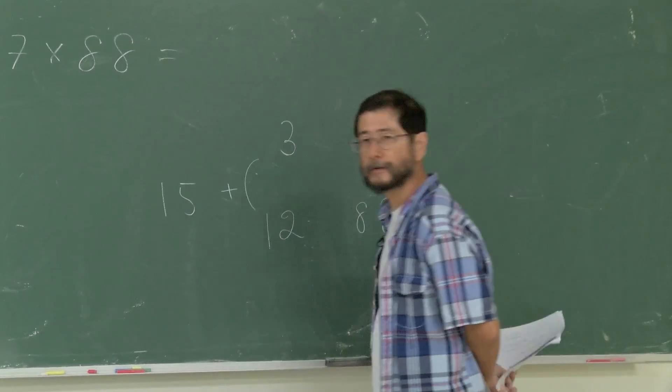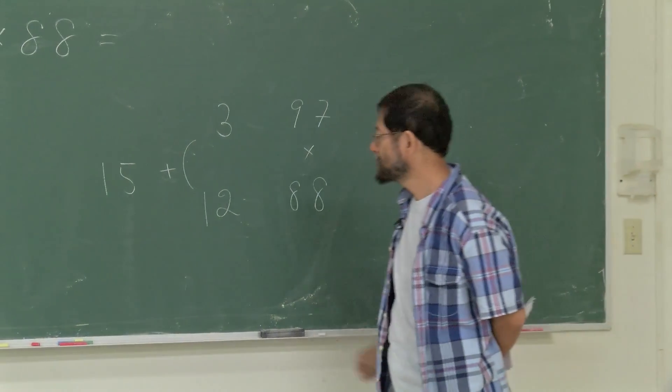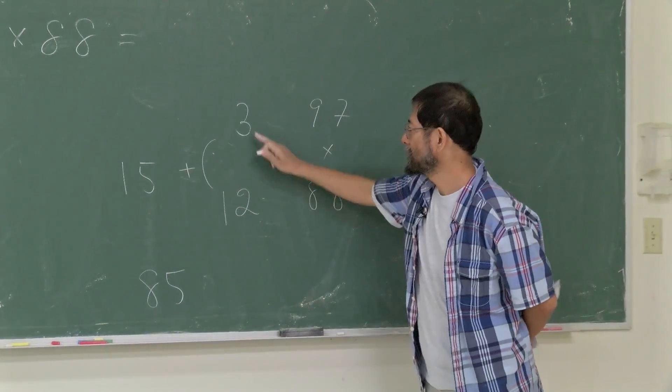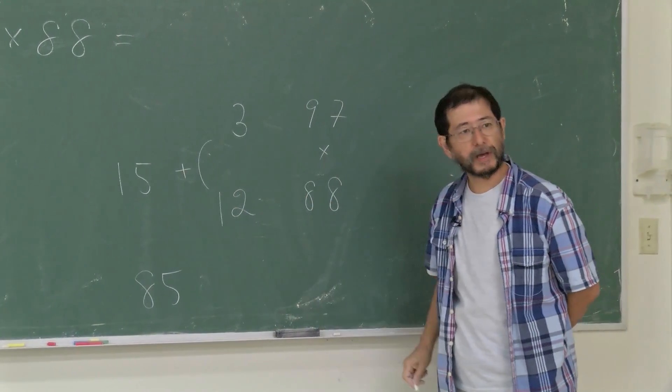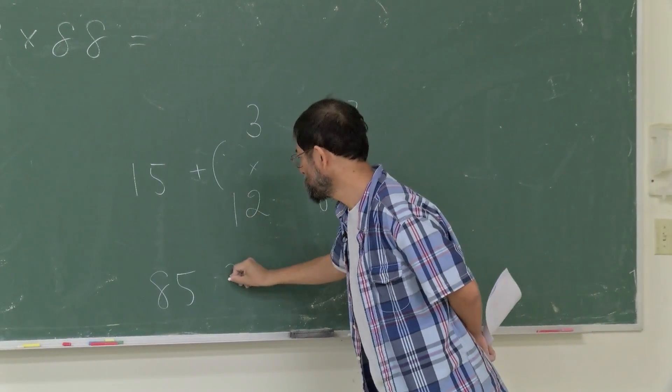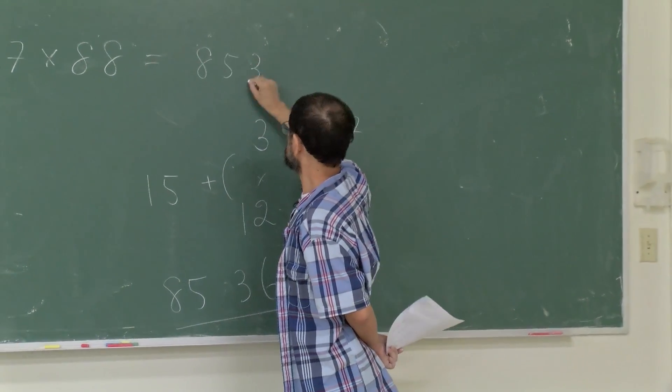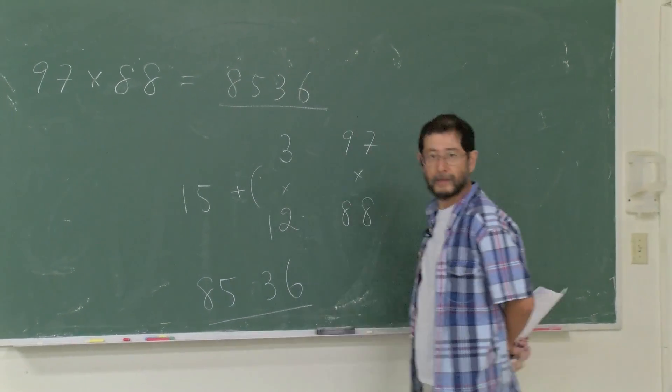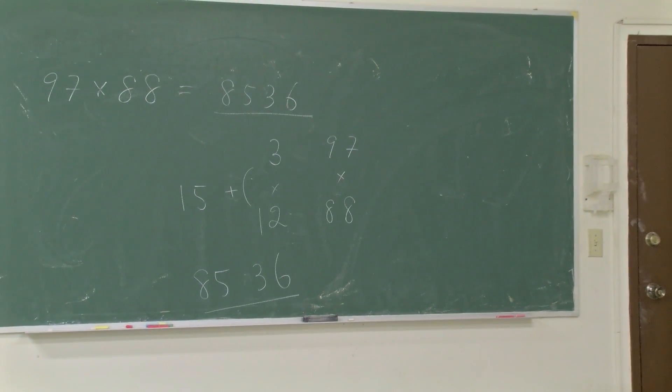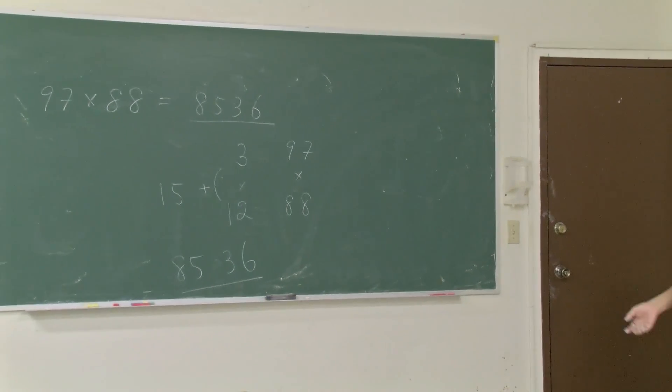Now, 100 minus 15, which is 85. On the other hand, if you multiply these 3 and 12 together, 3 times 12, you get 36. And that's the answer here.